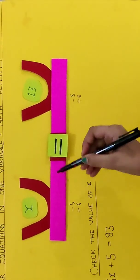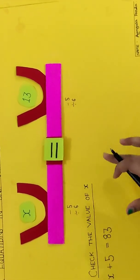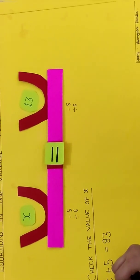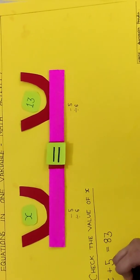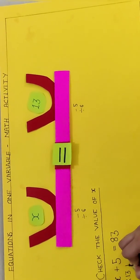So here we got the value of x which is 30 and we have to check if the value of x is correct or not. So the first step is we have to put the value of x and add it with 5.